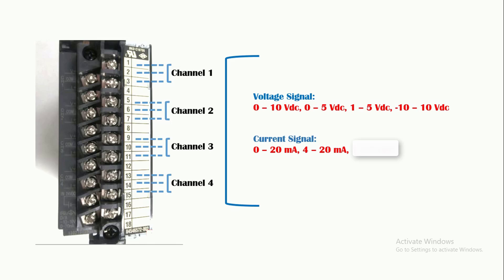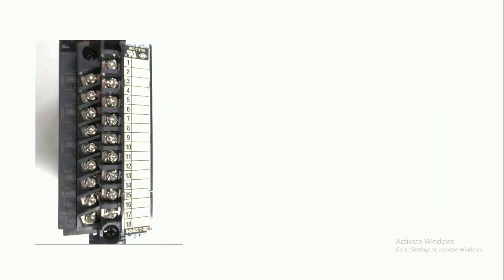The selection of analog signal depends on which type of control devices are connected with the analog output. Once the type of signal is decided for a particular control device, we can easily select the type and range of signal during analog output configuration in PLC programming. Now let us see how we can perform the hardware connection for PLC analog output to generate analog signal using a PLC program.